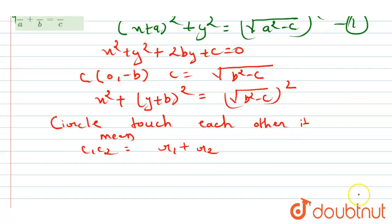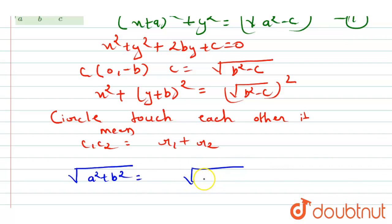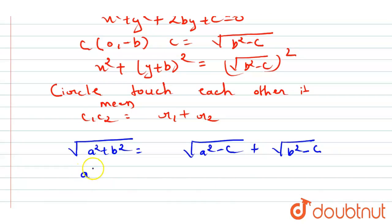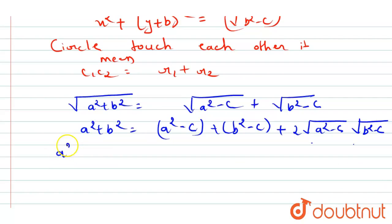Finding c1c2 as the distance between centers, we get √(a² + b²). So √(a² + b²) = √(a² - c) + √(b² - c). Squaring both sides: a² + b² = a² - c + b² - c + 2√(a² - c)·√(b² - c), which gives a² + b² = a² - c + b² - c + 2√(a² - c)·√(b² - c).